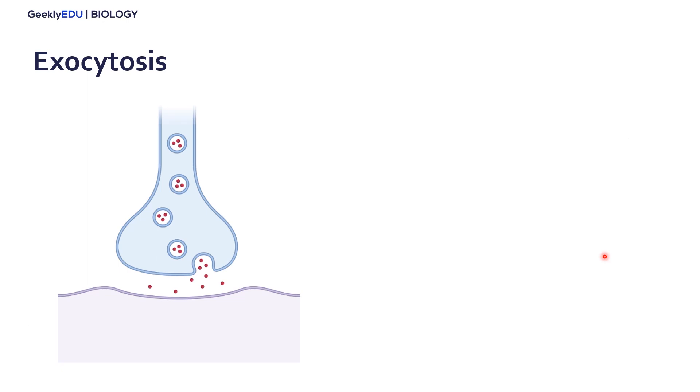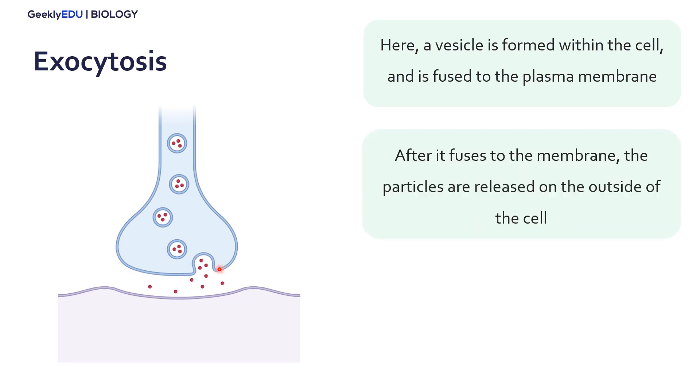Next, we have exocytosis - leaving the cell. A vesicle is first formed within the cell and will move to the outer membrane where it will fuse to the plasma membrane. Once it fuses to the membrane, the particles will be dispersed outside the cell.